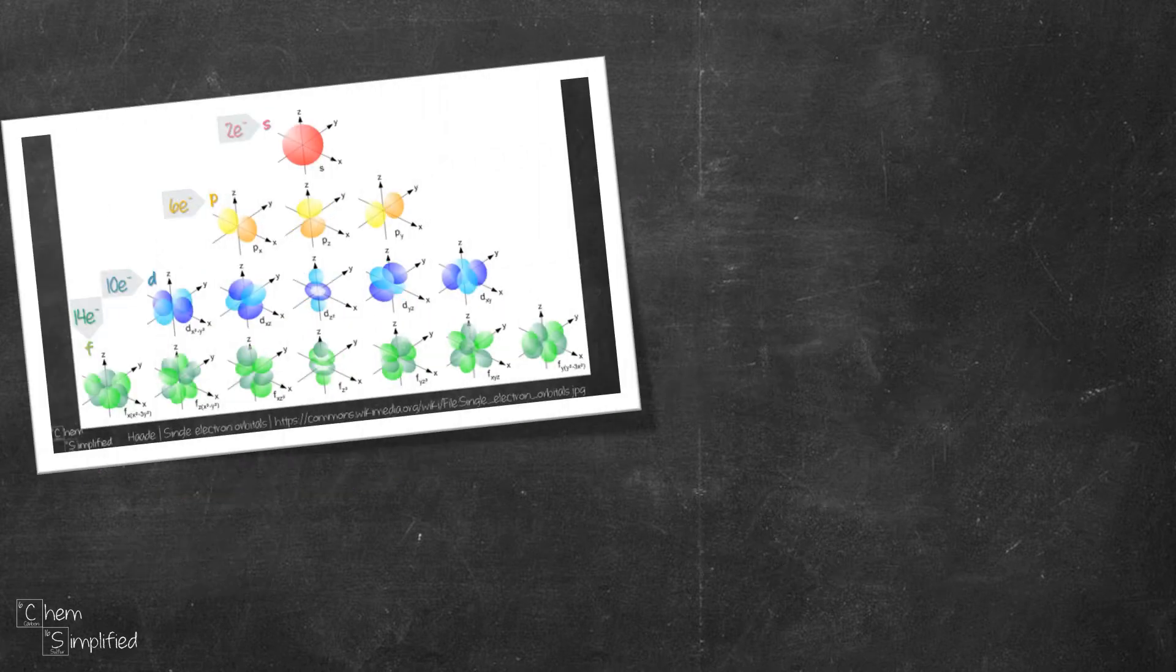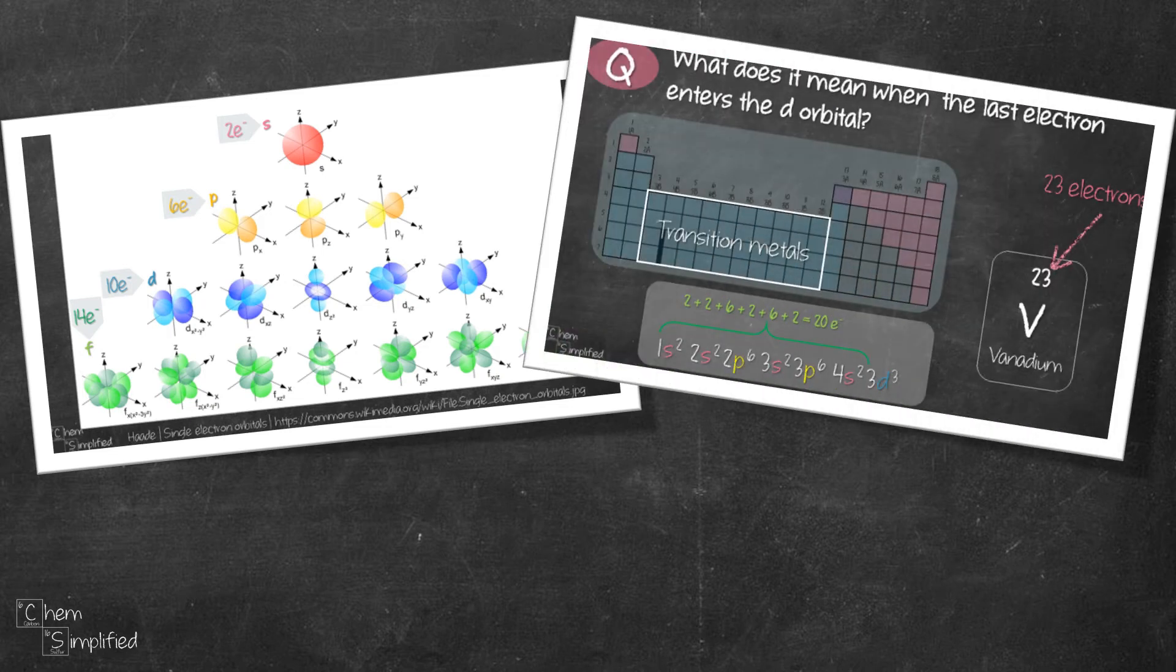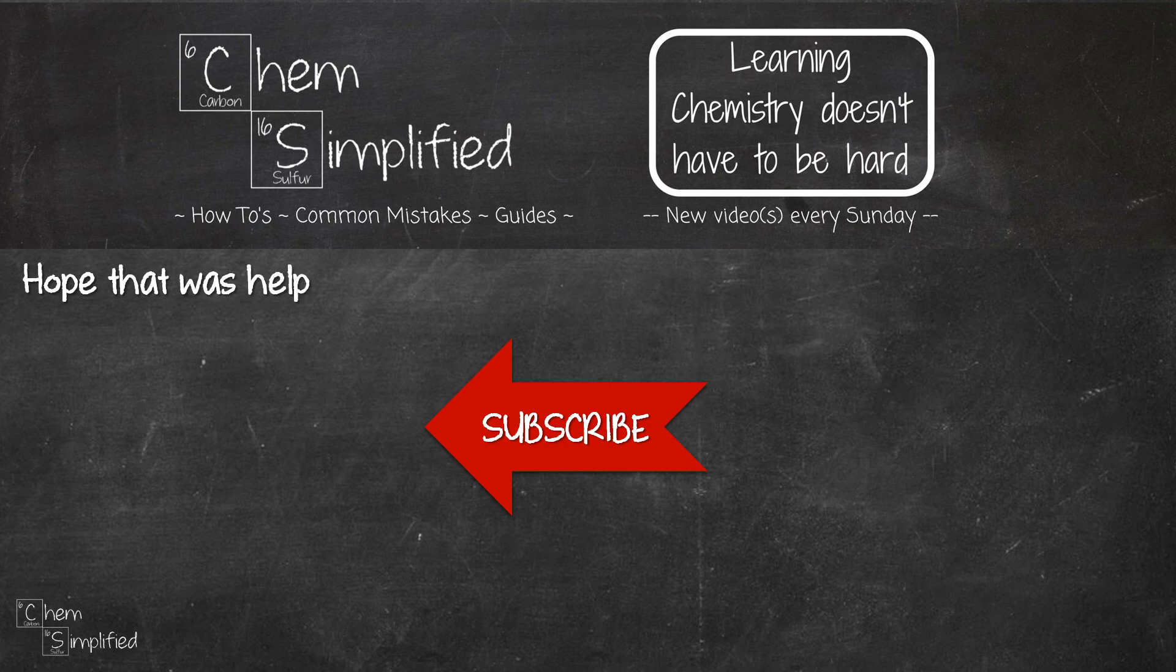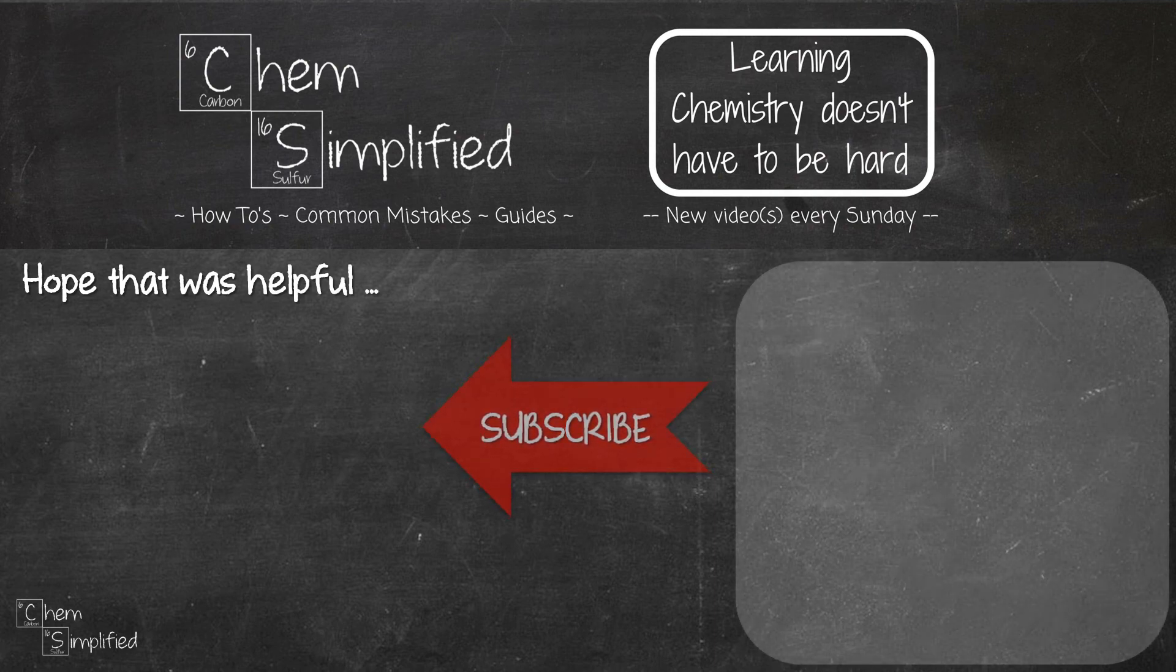With that, we've gone through a quick intro to spdf orbitals and the number of electrons that each of these orbitals can hold. We also talked about the electron configuration for transition metals, where all the final electrons in the element always enters into the d orbital. And then we also look at how s and p orbitals are hybridized into sp, sp2 and sp3. Hope this video helps! Do subscribe! And thanks for watching!